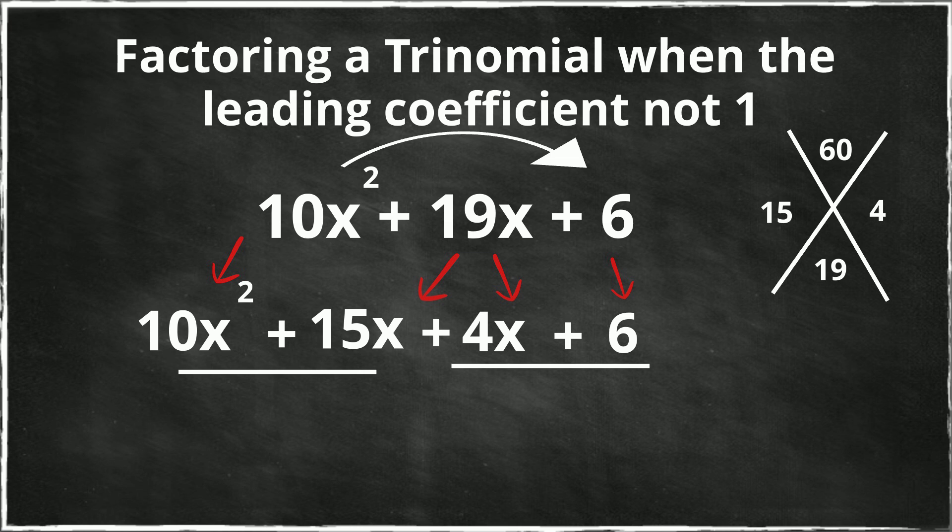Now I'm going to factor out the greatest common factor for both of these. With 10x squared plus 15x, I can factor out the greatest common factor of 5x. So I have 5x times 2x plus 3 because 5x goes into 10x squared 2x times and then it goes into 15 3 times.